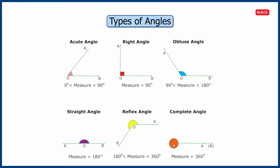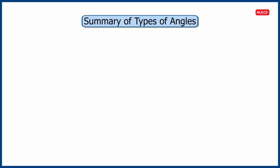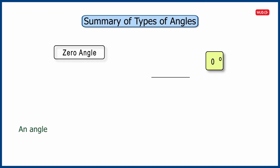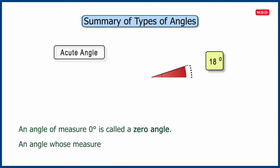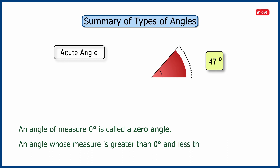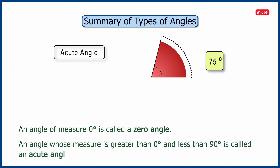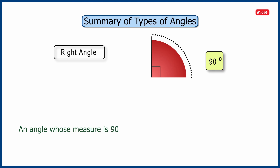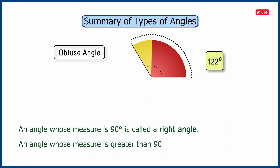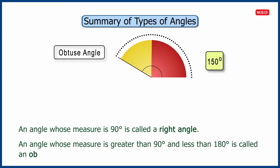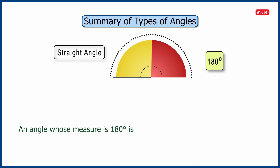Hope you are able to guess the type of angles by looking at each of them. Let us summarize the types of angles learnt so far. An angle of measure zero degree is called a zero angle. An angle whose measure is greater than zero degree and less than 90 degrees is called an acute angle. An angle whose measure is 90 degrees is called a right angle. An angle whose measure is greater than 90 degrees and less than 180 degrees is called an obtuse angle. An angle whose measure is 180 degrees is called a straight angle.